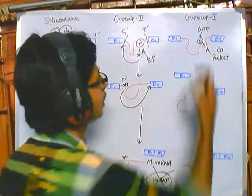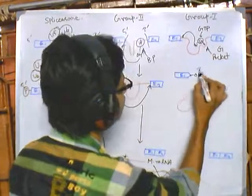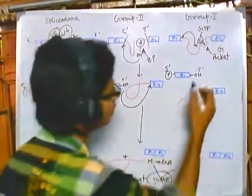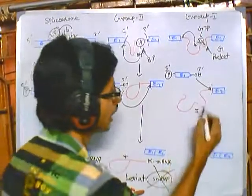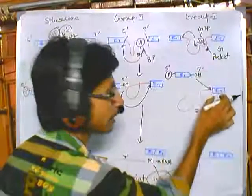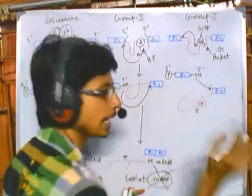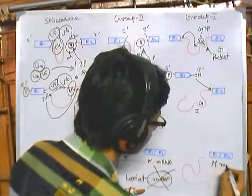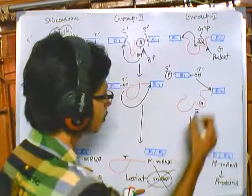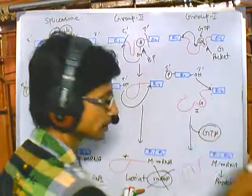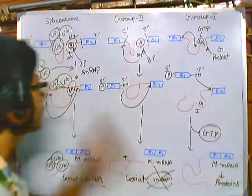The G provides the hydroxyl, and using this hydroxyl it attacks E1, which is then cleaved. E1 will have a 3' hydroxyl and a 5' phosphate. This 3' hydroxyl of E1 attacks the 3' splicing site between the intron and exon 2. As a result of this attack, E1 binds with E2 to produce mature mRNA. The G is released and the rest of the intron region is disassembled.